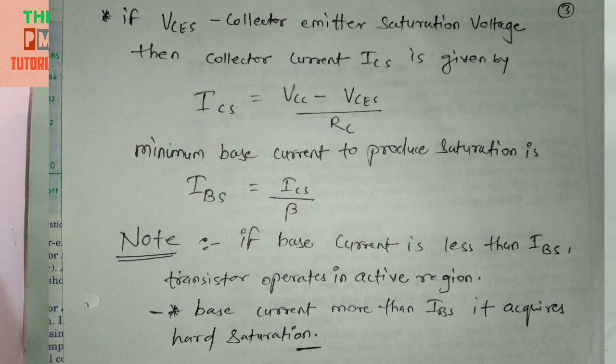Here, current amplification factor is equal to IC upon IB. If base current is less than IBS, then transistor operates in active region. But we do not need here active region. We are operating here in cutoff region or saturation region. And if base current is more than IBS, it acquires hard saturation.